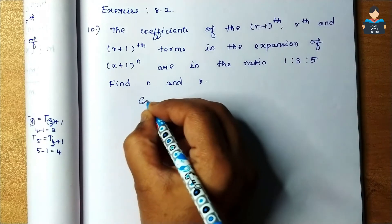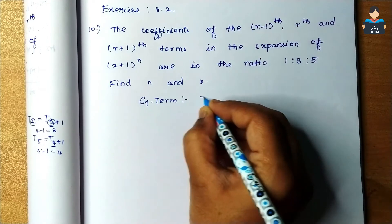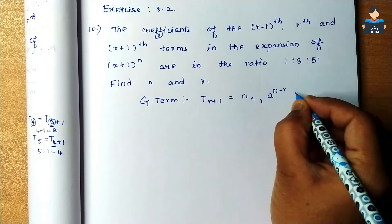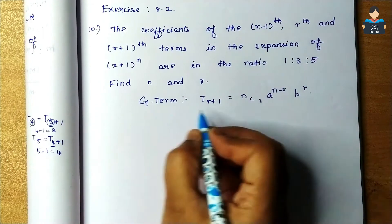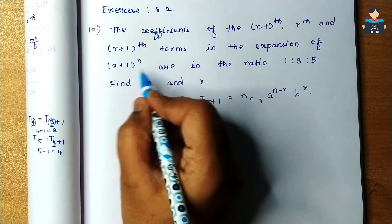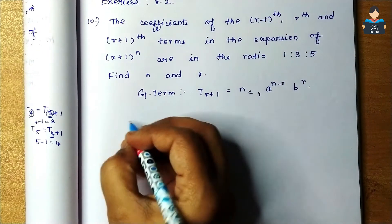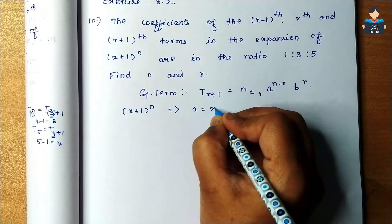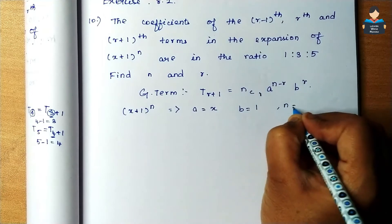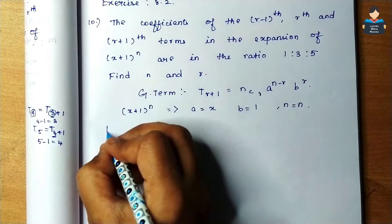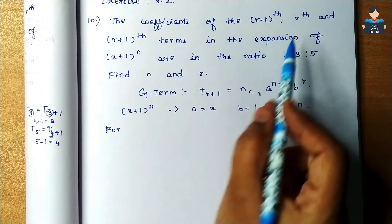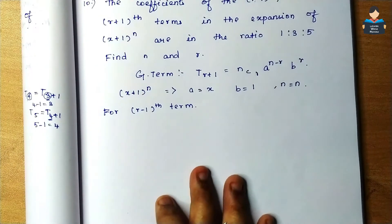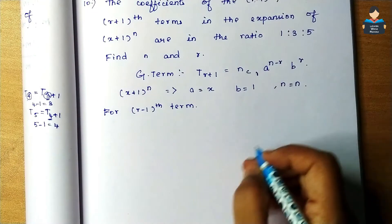First, the general term formula: T(r+1) = nCr × a^(n-r) × b^r. The given expression is (x+1)^n, where a is x, b is 1, and n is n. Now let's find the (r-1)th term. For the (r-1)th term, we need to look at this general term formula carefully.